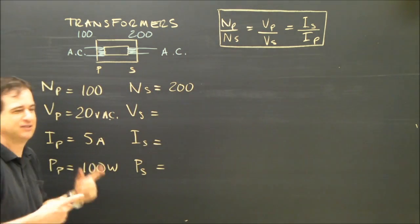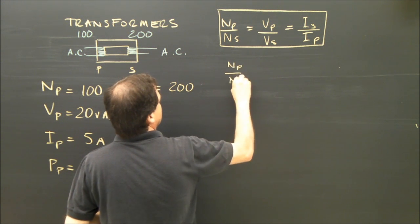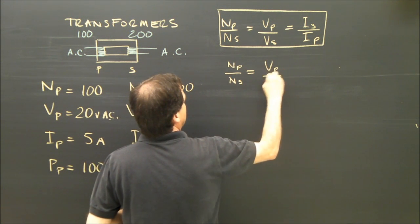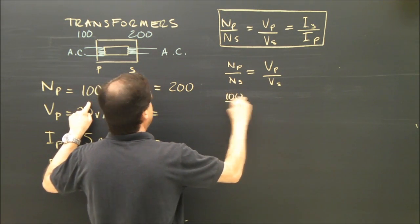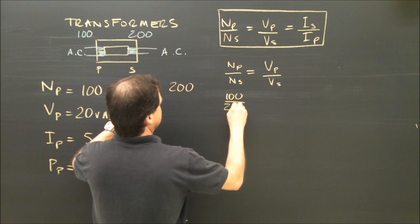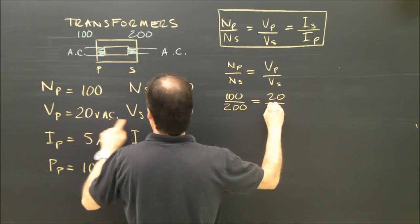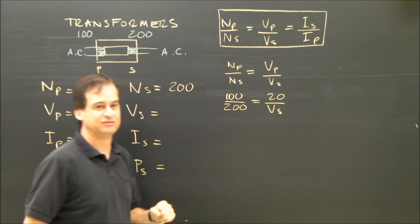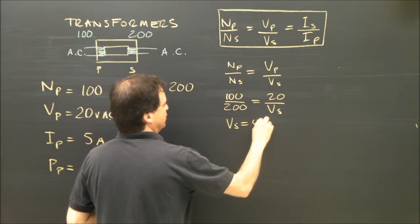Now, as I said, we already know this is going to be 40, but let's figure it out. So what we're going to say is the number of the primary over the number of the secondary, voltage of the primary, voltage of the secondary. So we've got 100 over 200 is equal to 20 over voltage of the secondary. Rearrange that and you get voltage of the secondary is 40 volts.